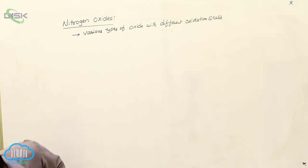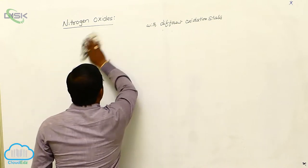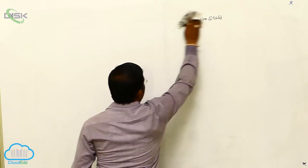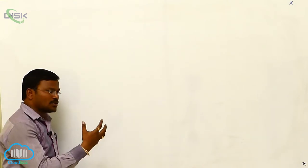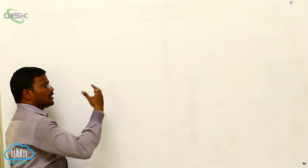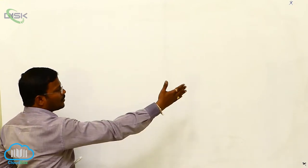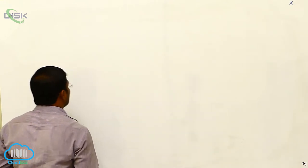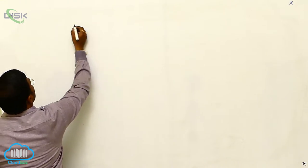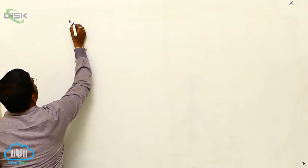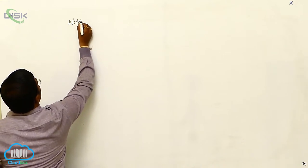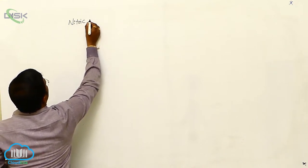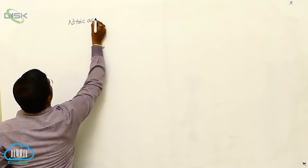After nitrogen oxides — six nitrogen oxides stated by us — their preparation and oxidation state of nitrogen in the respective nitrogen oxides, followed by Lewis structures and bond lengths and bond angles in the respective oxides, the next topic is nitric acid.